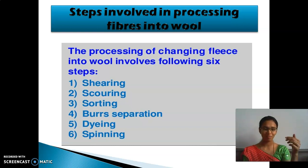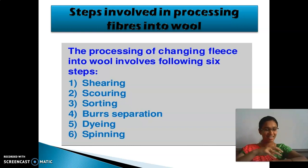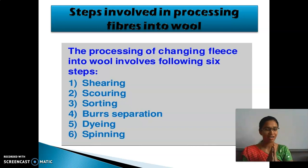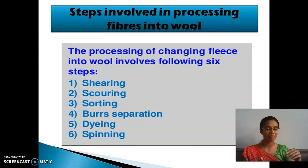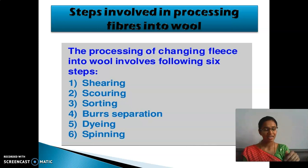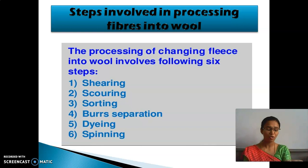So what is the first step in wool processing? Shearing - that is removing the outer surface. Then scouring, which is nothing but washing. Then sorting and separation. Then burst separation. Then dyeing. The last one is spinning - rolling that yarn into thread.